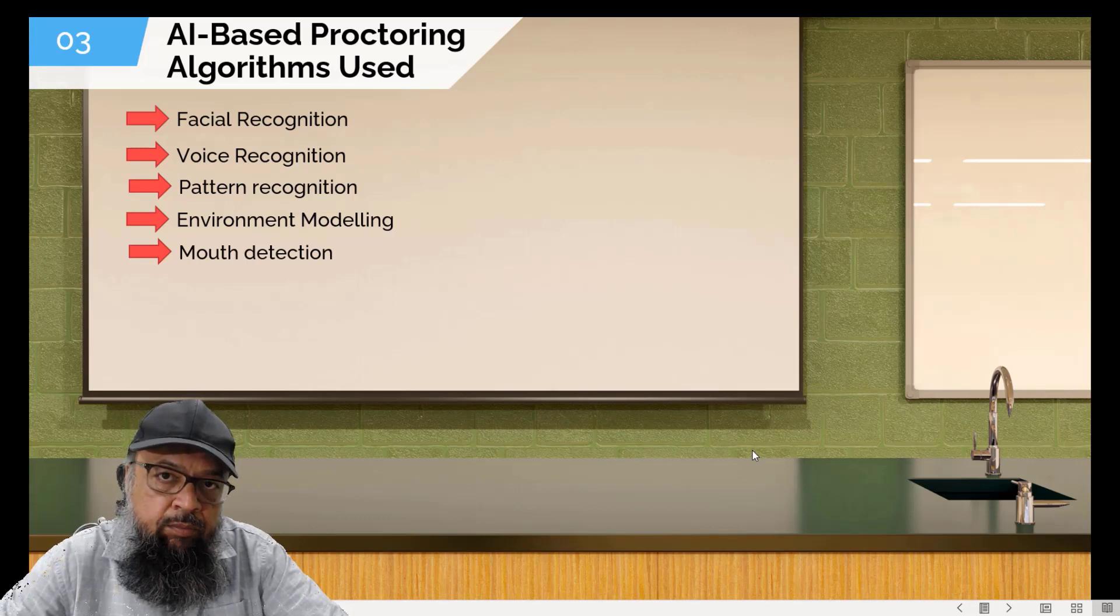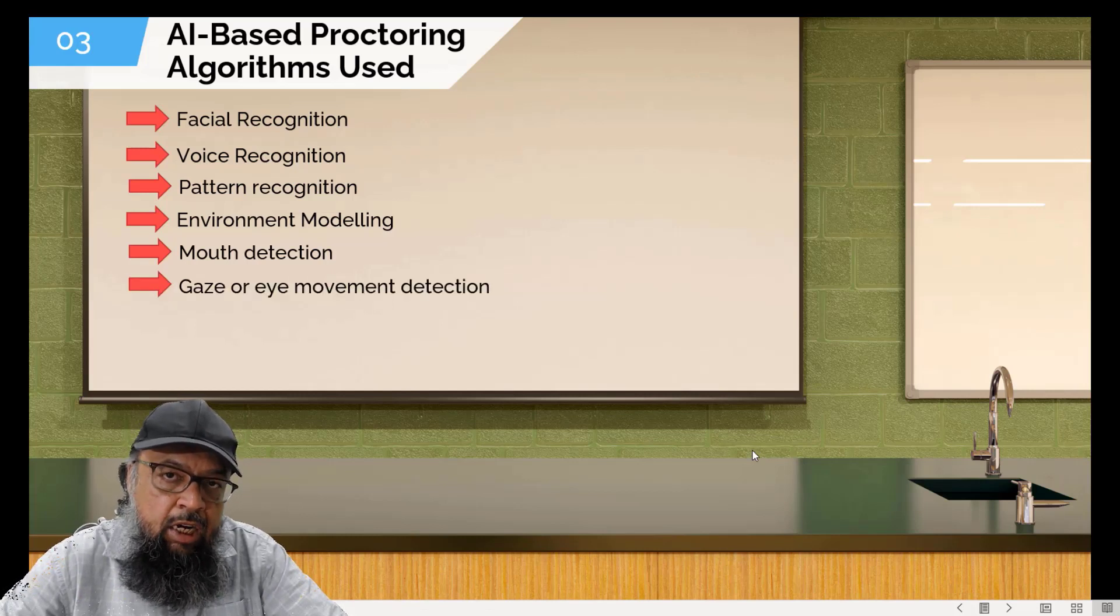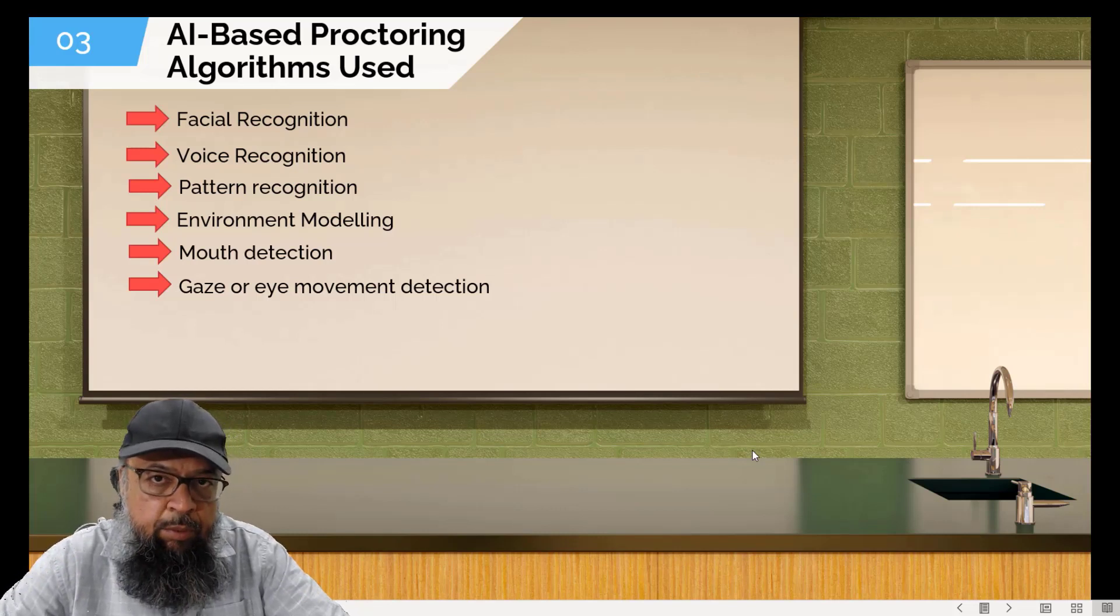Or they can record this in their system, and later a human proctor can review that. Then they also can detect gaze or eye movements, and based on that, they can decide whether the student is looking outside their screen for a longer period of time purposefully to get some information.